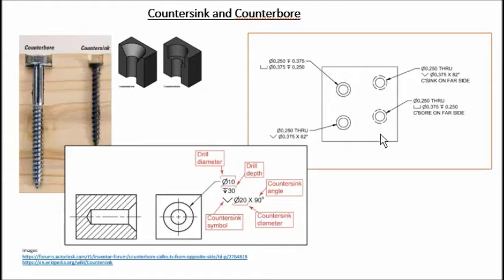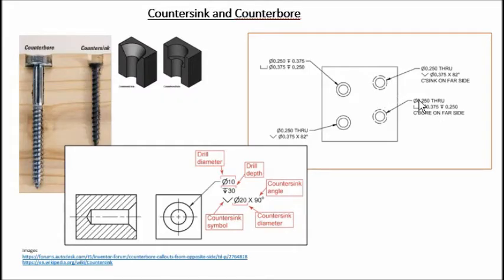Looking at an example plate: this is countersunk on the top — we're looking at it from the top — because this is the countersunk symbol, the V shape. This is counterbore on the top because this is the counterbore symbol. Where you see a hidden line, the feature cannot be seen from the top, so it must be on the bottom of the plate. The countersink symbol is a V; the counterbore symbol has a distinct flat-bottomed profile. It might say countersink or counterbore explicitly on the drawing.